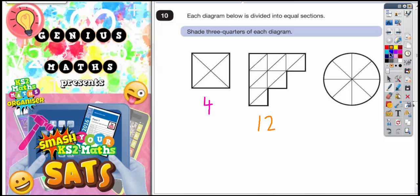In the third diagram there's 1, 2, 3, 4, 5, 6, 7, 8. 8 sections.